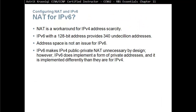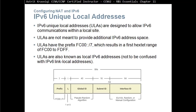NAT for IPv6: IPv6 doesn't really need NAT because there are so many IPv6 addresses. NAT is a workaround for IPv4 address scarcity. IPv6 uses 128 bits, providing 340 undecillion addresses, so address space is not an issue. IPv6 makes public/private NAT unnecessary by design. However, IPv6 does implement a form of private addresses, implemented differently than IPv4 — these are called unique local addresses, not to be confused with link-local addresses.